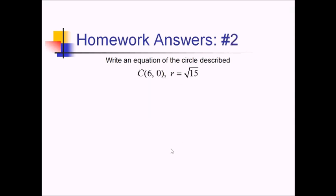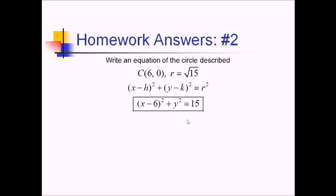For number two, we're trying to write the equation of this circle. We'll start with the general center-radius form: (x − h)² + (y − k)² = r². The h value is the x value of the center, 6, so (x − 6)² + y² = (√15)², which is just 15.